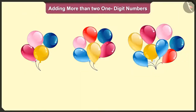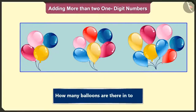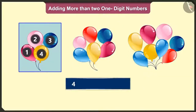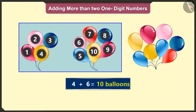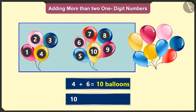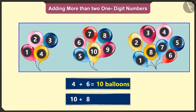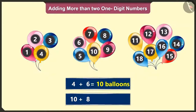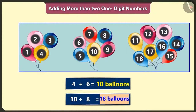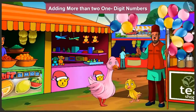So now tell me how many balloons are there in total? If we add four balloons of the first group to six balloons of the second group, then count after four: five, six, seven, eight, nine and ten balloons. To these, we add eight balloons of the third group, then after ten: eleven, twelve, thirteen, fourteen, fifteen, sixteen, seventeen and eighteen balloons. So the total number of balloons is eighteen. Well done, Pilloo. Thank you, Auntie.